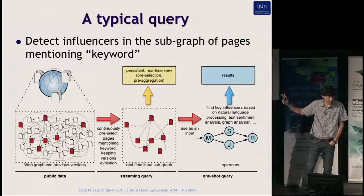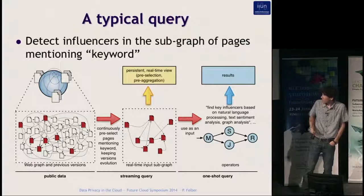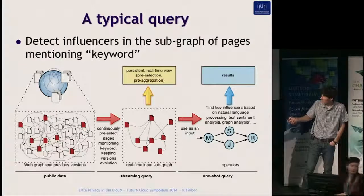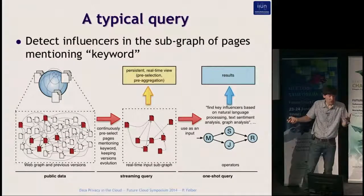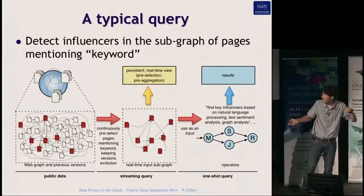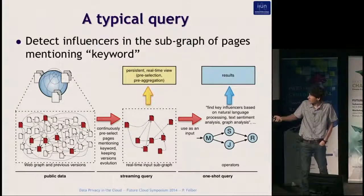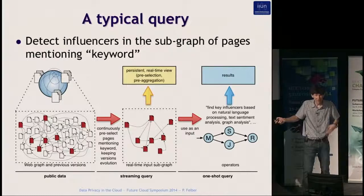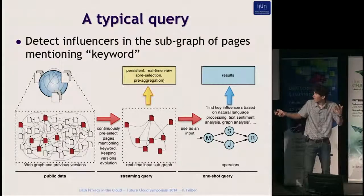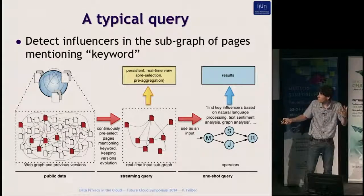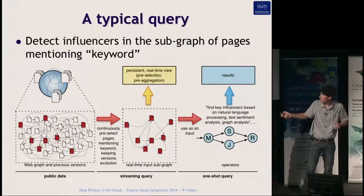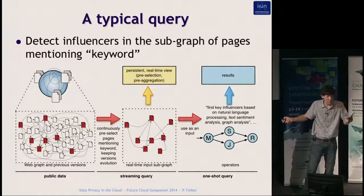A typical query: you gather data from the web, constructing a versioned web graph so you can monitor changes as you re-crawl. This feeds continuous queries that register listeners on specific data types and maintain a view. One-shot queries then run on this continuously maintained view — combining stream-oriented and traditional query approaches.